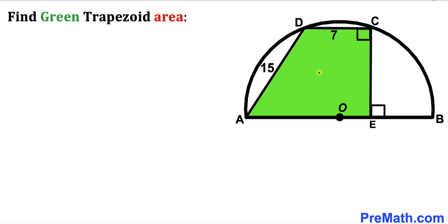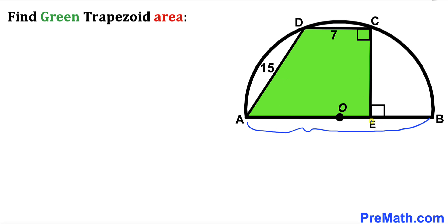In this video we have got this green shaded trapezoid AECD fully confined in a semicircle with center O. This side length CD is 7 units, this side length AD is 15, and AB is the diameter of this semicircle. These are our 90-degree angles, and our task is to calculate the area of this green shaded trapezoid AECD.